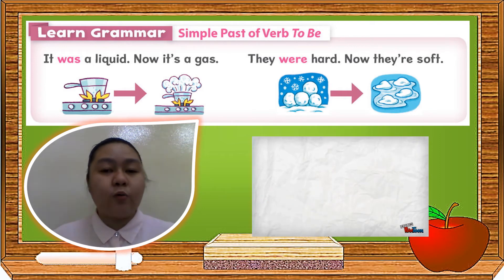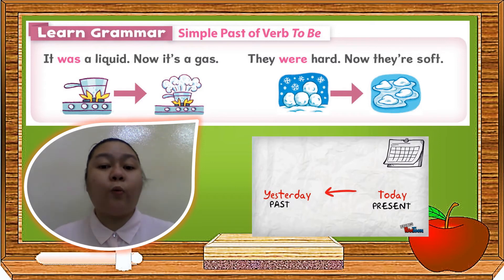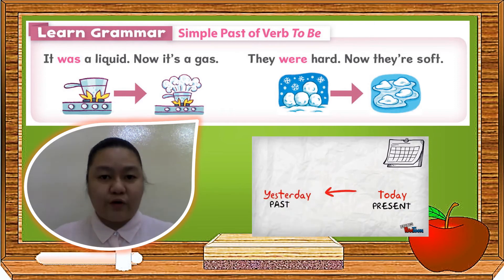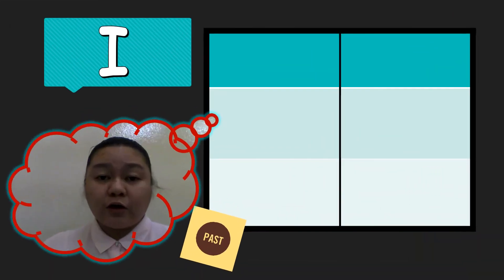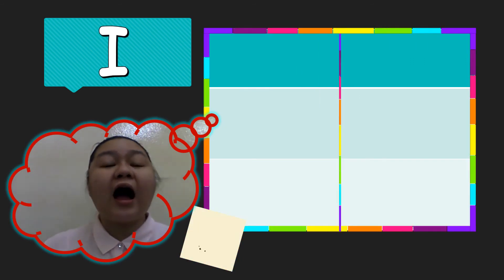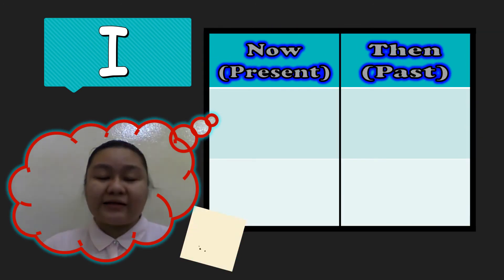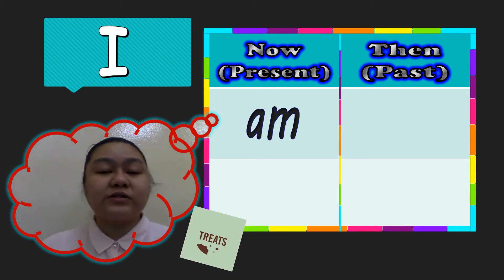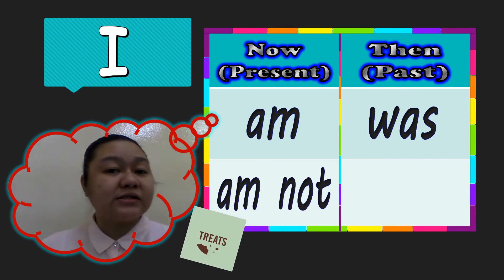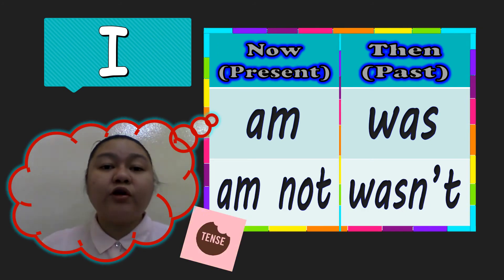Another example: 'They were hard. Now they're soft.' Notice the red word 'were' — 'were' is also used in simple past of verb to be. For clarification: if you use 'I' in the present, you use 'am.' In the past tense, you use 'was.' If you use 'am not,' you use 'wasn't.' You can only use 'am' and 'am not' with 'I.'